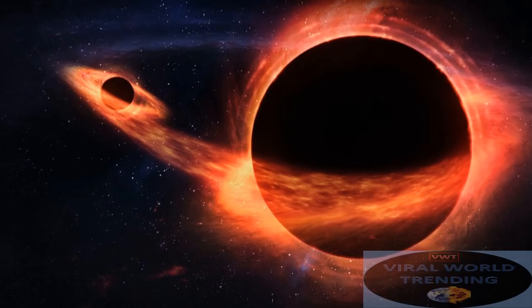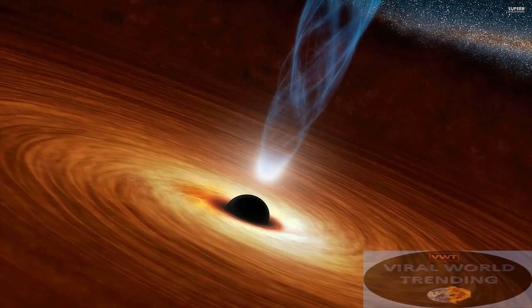How do black holes form? Scientists think the smallest black holes formed when the universe began. Stellar black holes are made when the center of a very big star falls in upon itself or collapses.